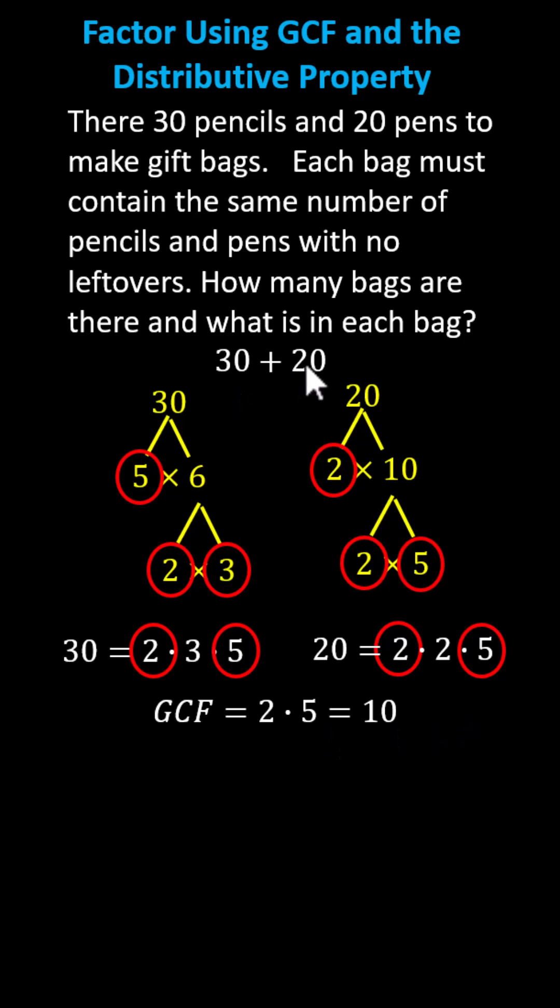Now I'll go back up to the sum of 30 and 20 and write 30 and 20 as products using the greatest common factor of 10, meaning we'll write 30 as 10 times 3 and 20 as 10 times 2. In this form, we will factor out the greatest common factor of 10. Notice if we factor out 10 from both 30 and 20, we're left with the sum of 3 and 2.